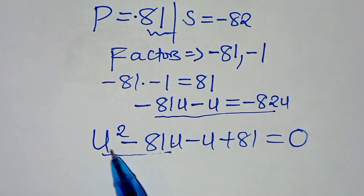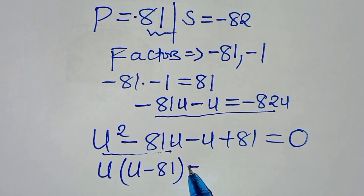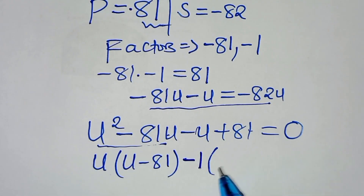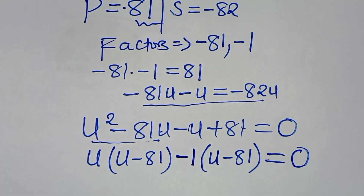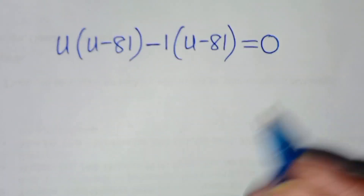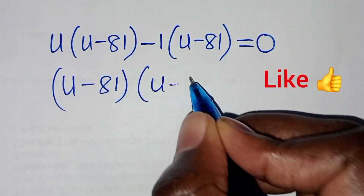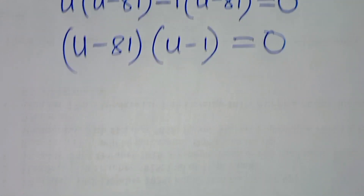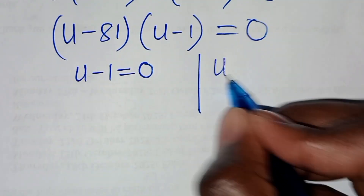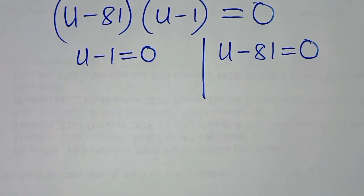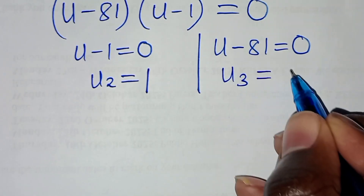Factoring: from the first two terms, u is common giving u(u minus 81), and from the last two terms, negative 1 gives negative 1(u minus 81). So (u minus 81)(u minus 1) equals 0, giving us u₂ equals 1 and u₃ equals 81.